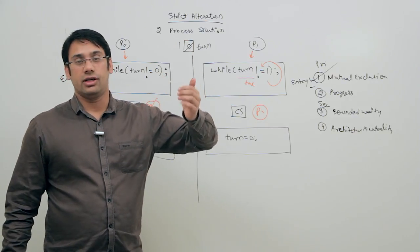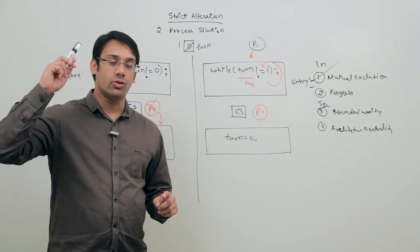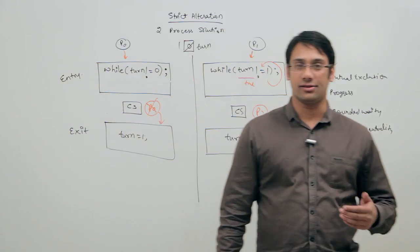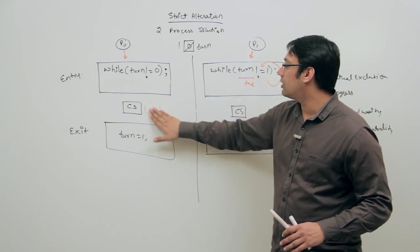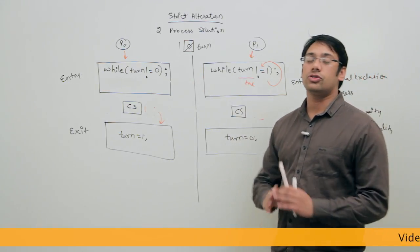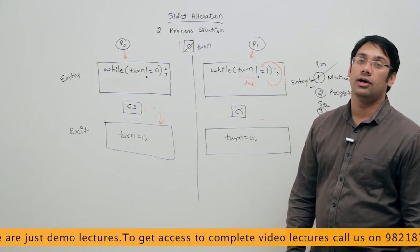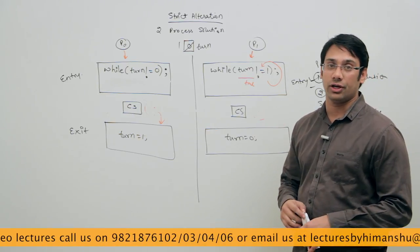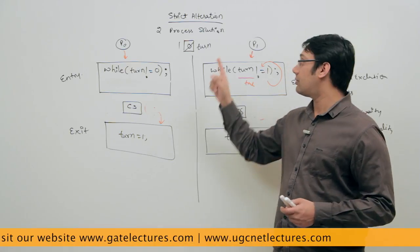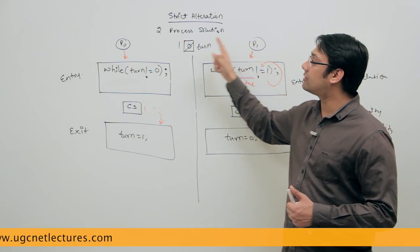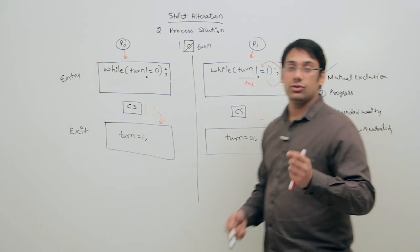Second condition: progress. Progress means if a process outside the critical section is not interested in entering, it should not stop another process that wants to enter. Consider: it is P1's turn, but P1 does not want to enter at all, while P0 wants to enter. P0 cannot enter unless P1 takes its turn and comes out — but P1 is not even interested in entering. So P1 is blocking P0, which means progress is NOT followed.